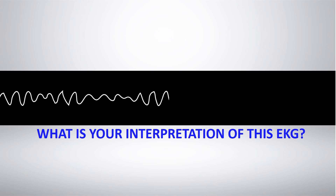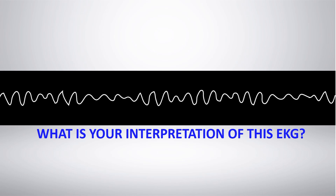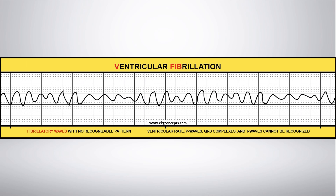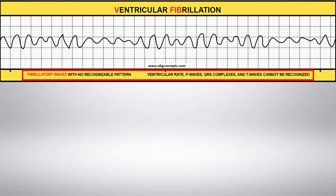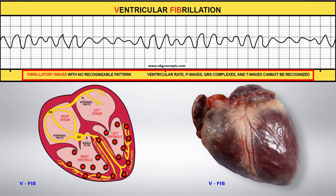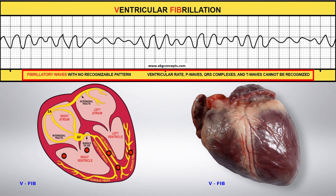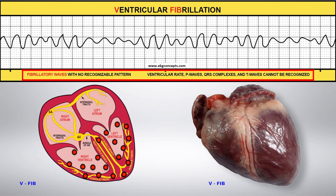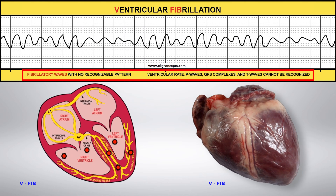What is your interpretation of this EKG? Ventricular fibrillation, more commonly known as V-fib. It is the most serious cardiac rhythm disorder. Just like atrial fibrillation, you have irregular and chaotic impulses, but now they are in the lower part of the heart, or the ventricles, which pump blood throughout the body.